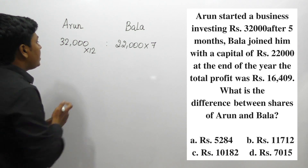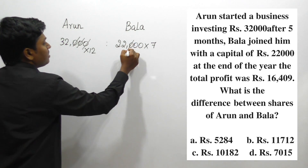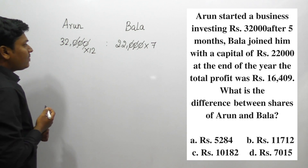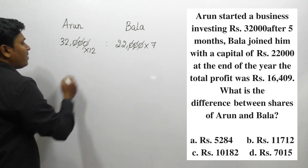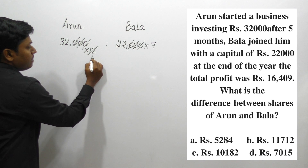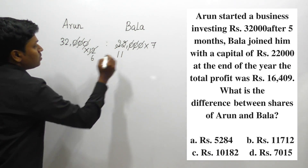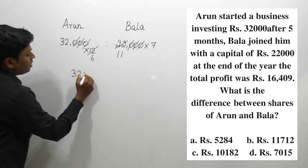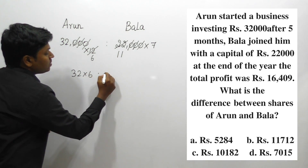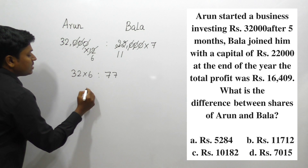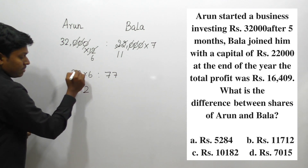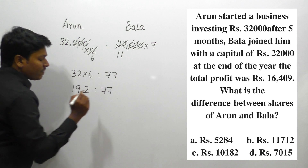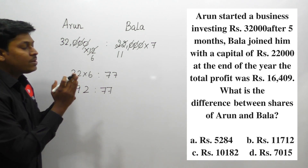Now we cancel the zeros: cancel three zeros from both sides. Then we cancel on the 2-table — 32 divided by 2 gives 16, and 22 divided by 2 gives 11. So we get 32 into 6 is to 22 into 7, which simplifies to 192 is to 77.